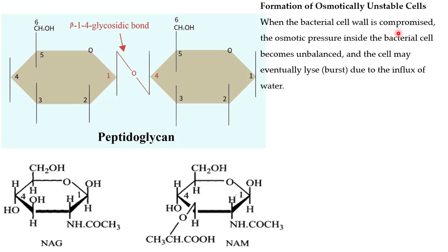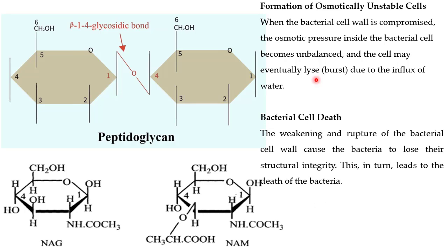When the bacterial cell wall is compromised, it leads to the formation of an osmotically unstable cell. The osmotic pressure inside the bacterial cell becomes unbalanced, and when osmotic pressure becomes unbalanced, the cell may eventually lyse due to the influx of water. The peptidoglycan layer is very important for maintaining this osmotic pressure. When it is gone, water enters the bacterial cell and the cell is going to rupture or burst. This weakening and rupture of the bacterial cell wall causes the bacteria to lose their structural integrity, which in turn leads to the death of the bacteria.